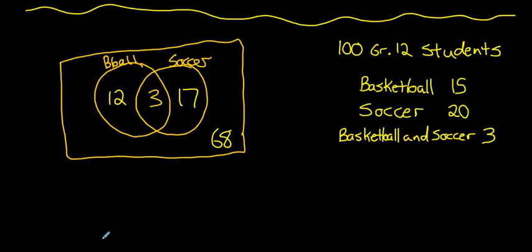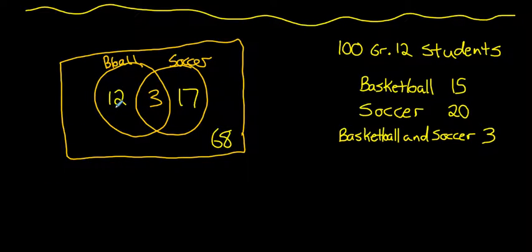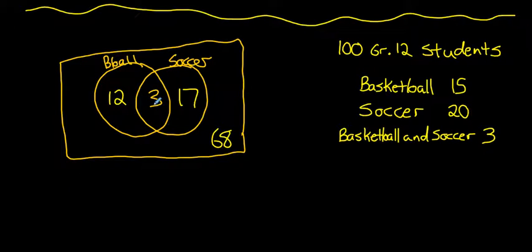Let's look at how we could count the number of elements in the union of basketball or soccer using a formula. We can tell from the diagram that 17 plus 3 plus 12 gives us 32 people in the union of basketball and soccer — 32 people are on the basketball or soccer team.